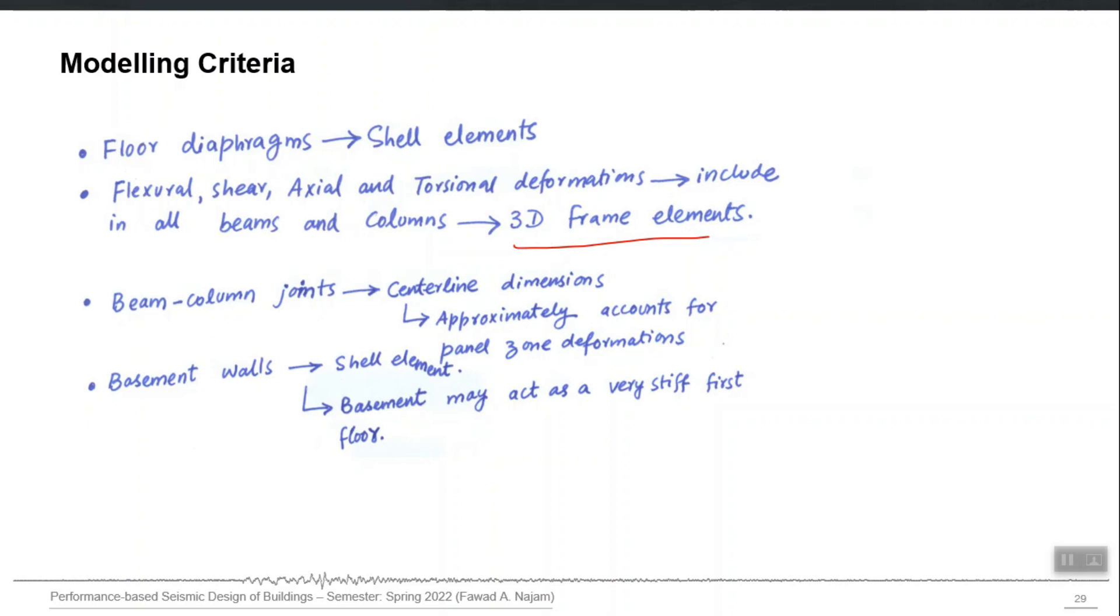In three-dimensional structure, each column can be subjected to six actions: two moments in two directions, one axial load, one torsion, and two shear forces. All six degrees of freedom, they are corresponding to six actions.